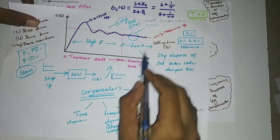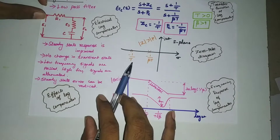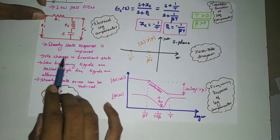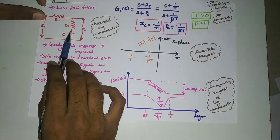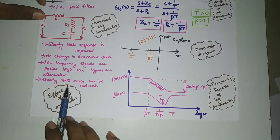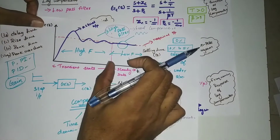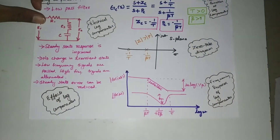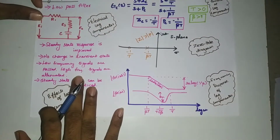Since this is a low pass filter, it will filter out all the high frequency components and only allow the low frequency, i.e., steady state components. By using this lag compensator we can improve the steady state response of a system — there is no change over the transient state. The steady state response is improved, meaning the steady state error is reduced to around 2 to 5 percent.